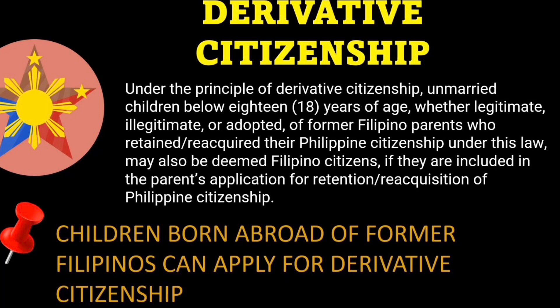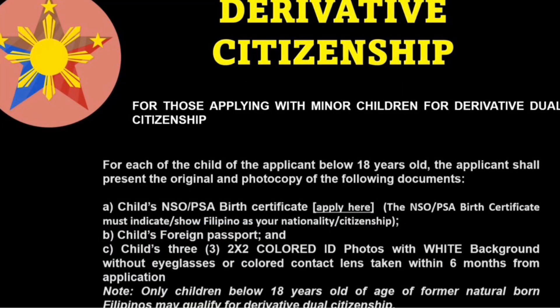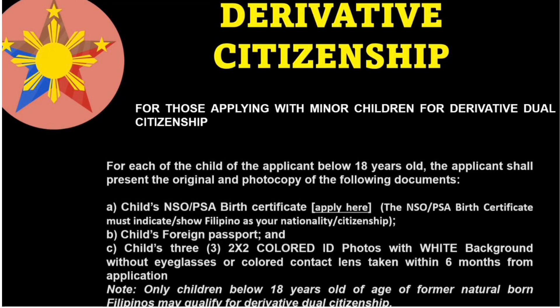For those applying with minor children for derivative dual citizenship, here is the list of documents: the child's birth certificate, the child's foreign passport, and the child's colored ID photos.